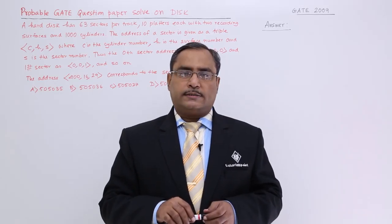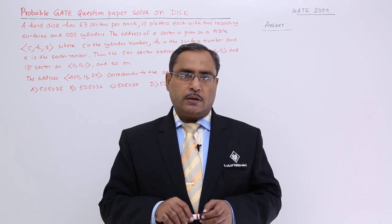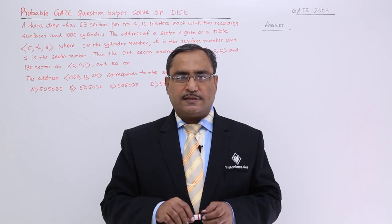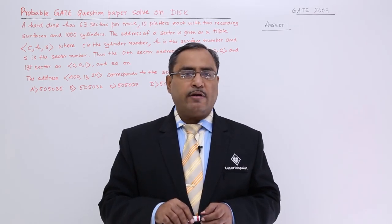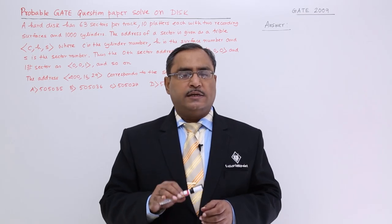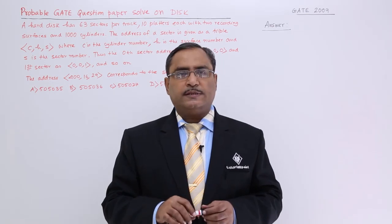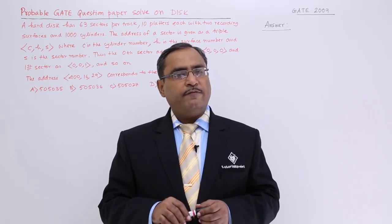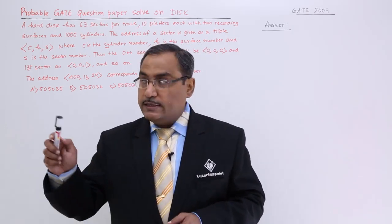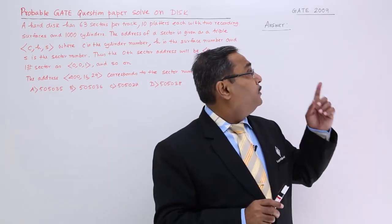Let us solve another problem on disk. Here we are considering a hard disk consisting of multiple platters, and each and every platter has got two surfaces where we can perform read and write. To have the conception of platters, surfaces, read/write heads, cylinders, tracks, and sectors, please watch the respective video where we have discussed everything with a suitable diagram. This question came in the GATE exam 2009.